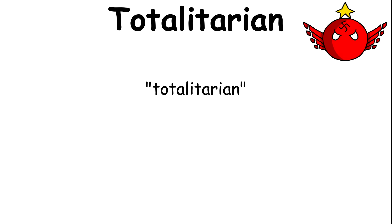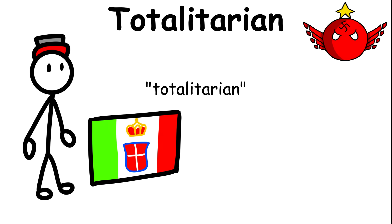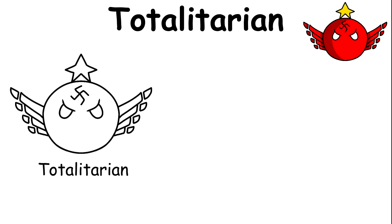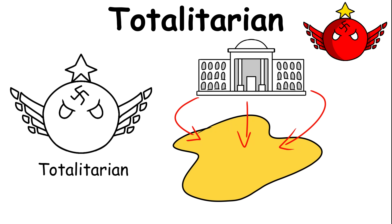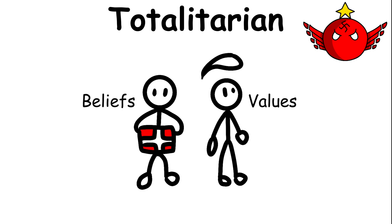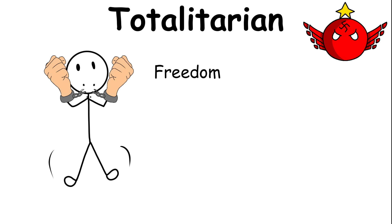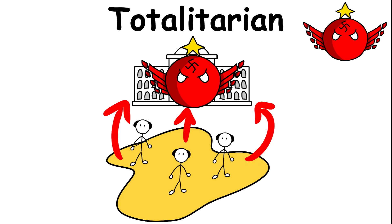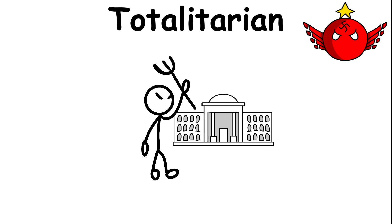The term totalitarian was originally coined by Benito Mussolini, who led the fascist state of Italy during his reign from the 1920s to the 1940s. A totalitarian system of government is when the government seeks to control everything within the country. This does not only include the political and economic matters of the country but also the beliefs and values of the citizens. Theoretically, the freedom of the citizens in a totalitarian regime is suppressed. Totalitarian government abides by the belief that everything within the state should fall under the control of the state, and that no one in the state should ever go against the state.